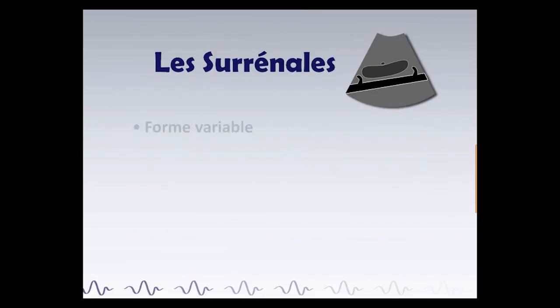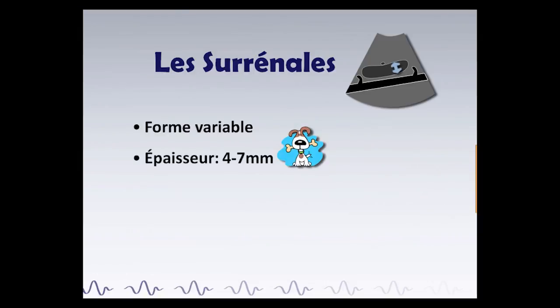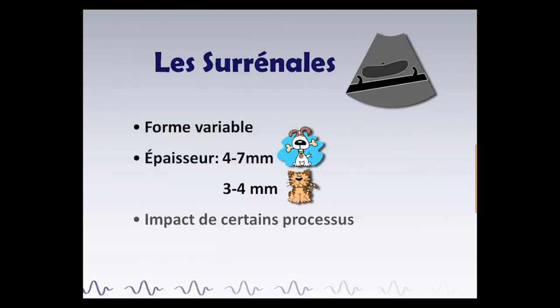Comme vu lors de ces clips vidéo, la forme de la glande surrénale variera en fonction de son côté, mais aussi entre les animaux. Elle sera par exemple plus aplatie chez les gros chiens et plus arrondie chez les petits chiens et particulièrement chez le chat. La mesure de son épaisseur dorso-ventrale sera la plus représentative et se situera en temps normal entre 4 et 7 mm chez le chien et 3 et 4 mm chez le chat. Notons finalement l'impact qu'exerceront différents types de pathologies endocriniennes ou non sur la taille de ces surrénales.